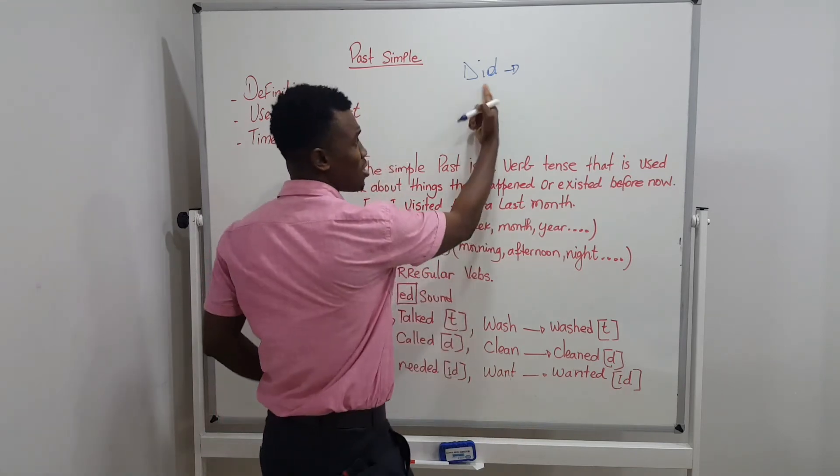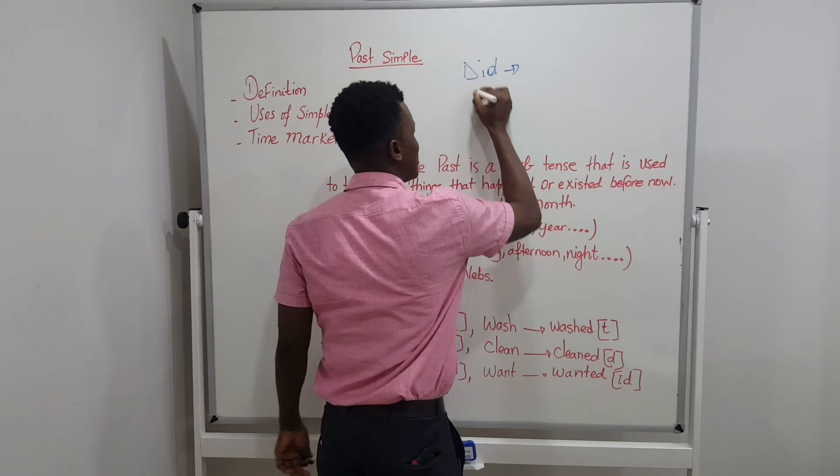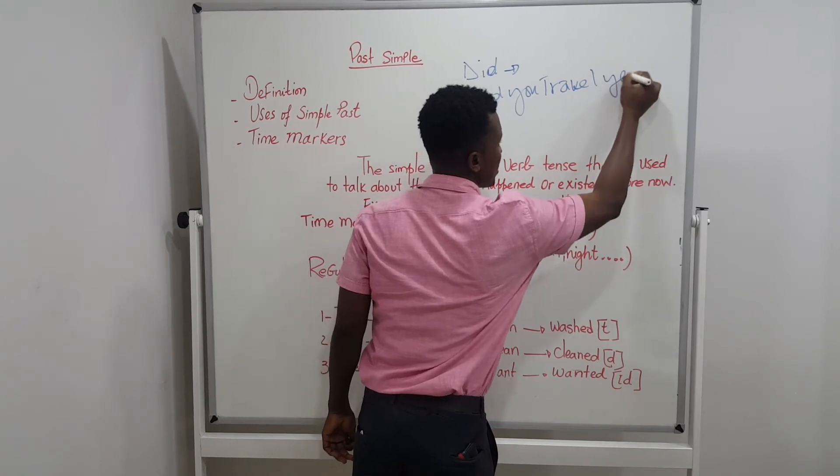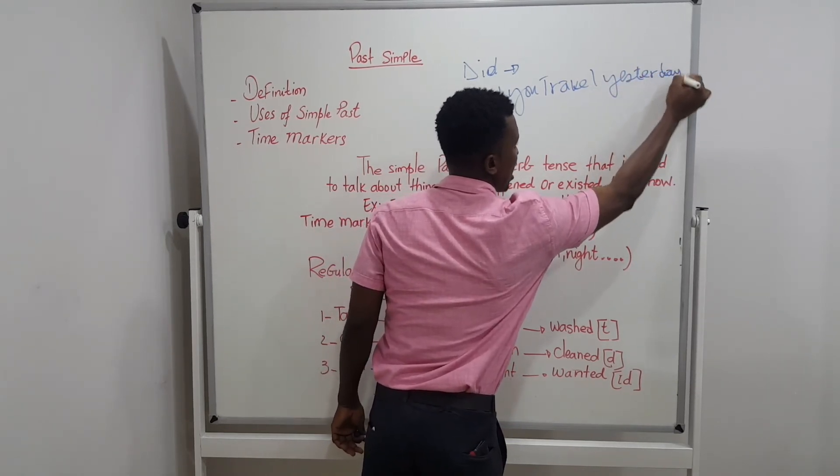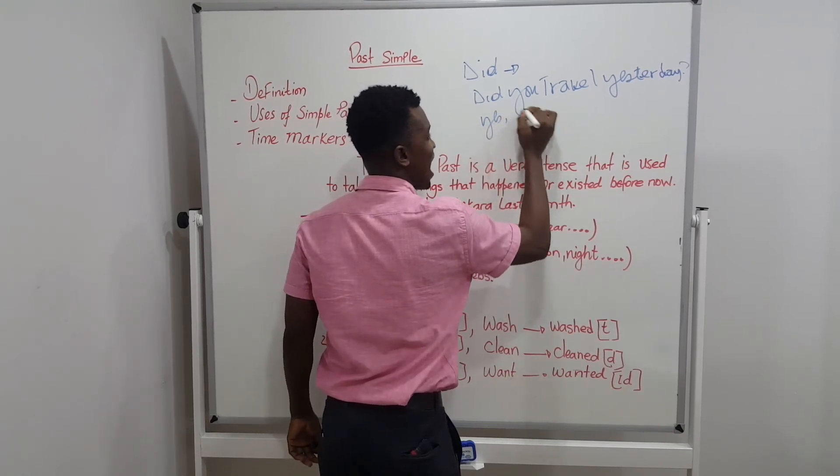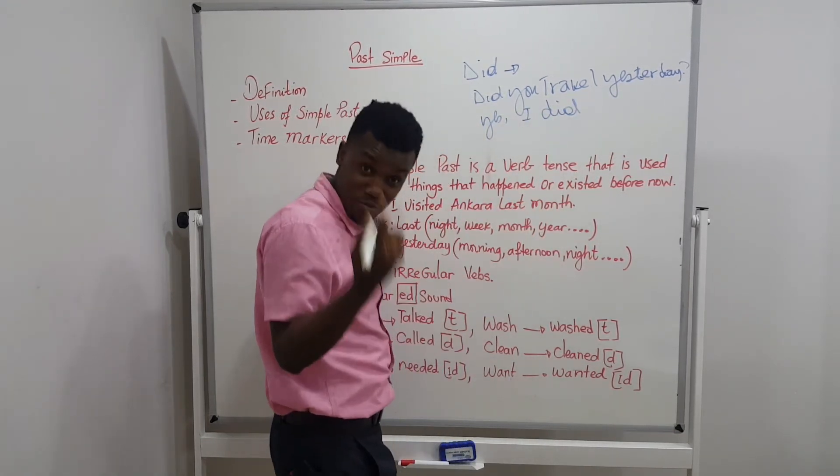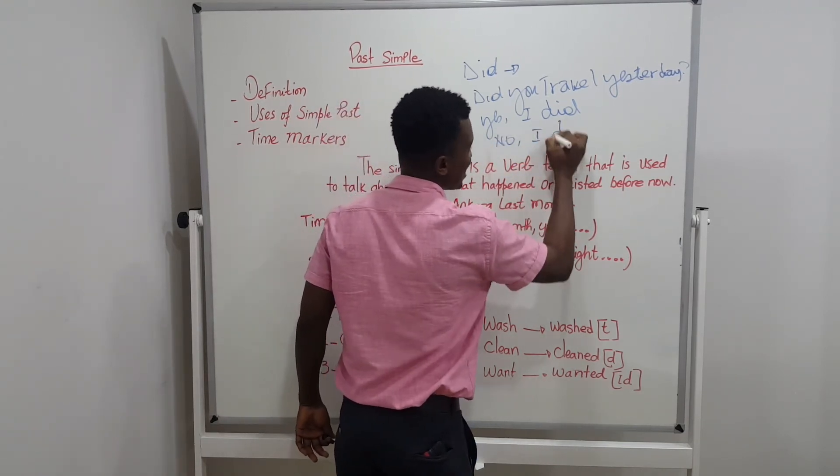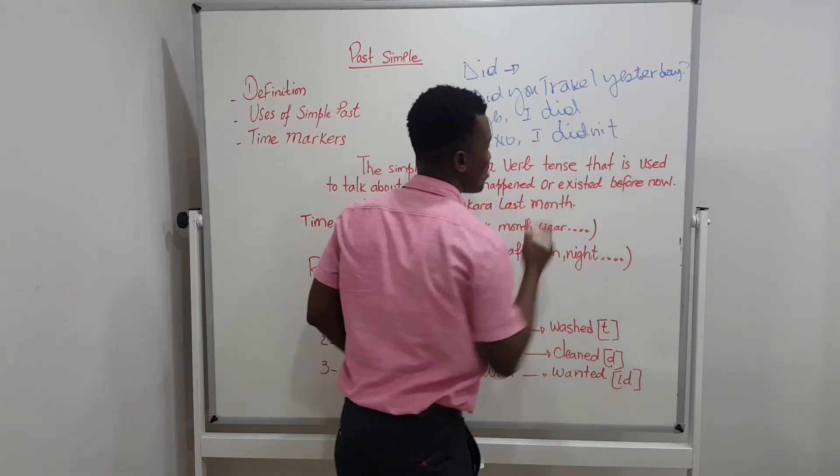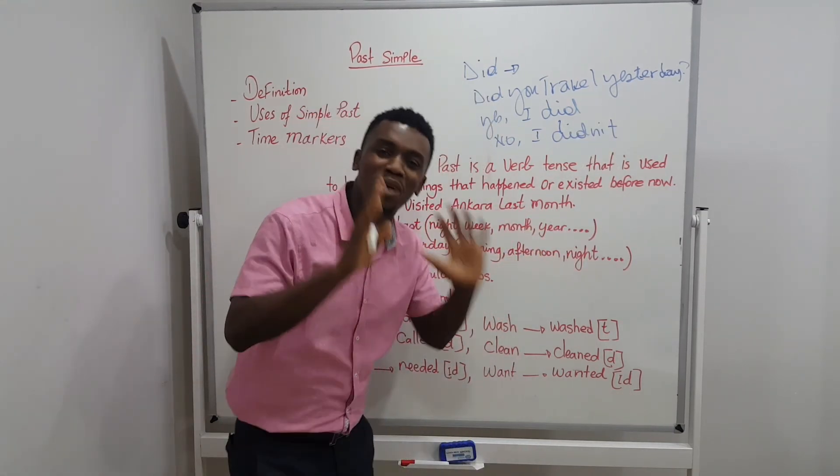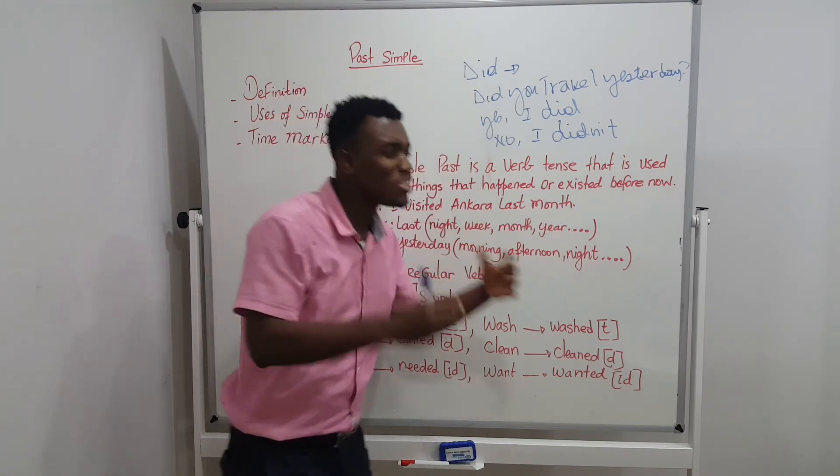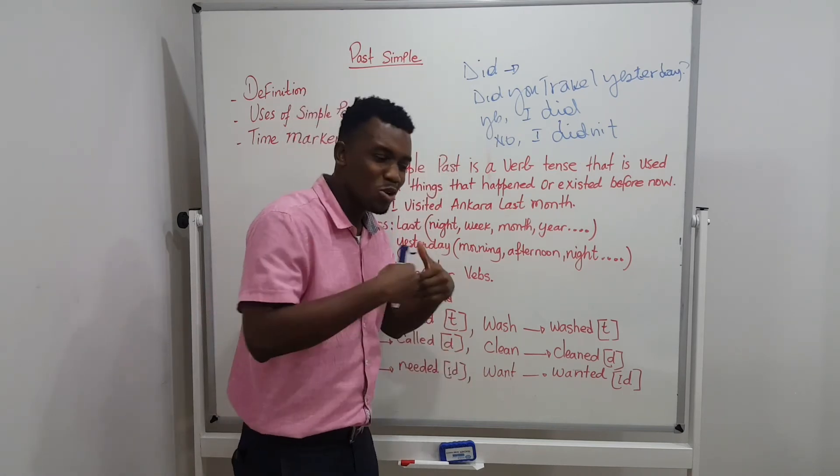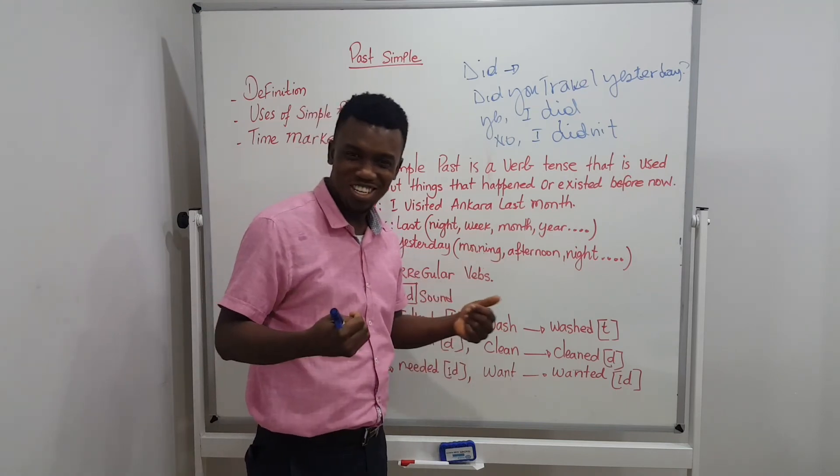To ask questions, you just need did. What do you say? Did. Did you travel yesterday? How do you answer? Yes, I did, for affirmative. And no, I didn't, for negative. If you want to ask questions in the past tense, just use did. Did you eat yesterday? Did you go to the beach? Did you wash the dishes? Did you clean your house? Did you attend the class? Did you follow the rules?